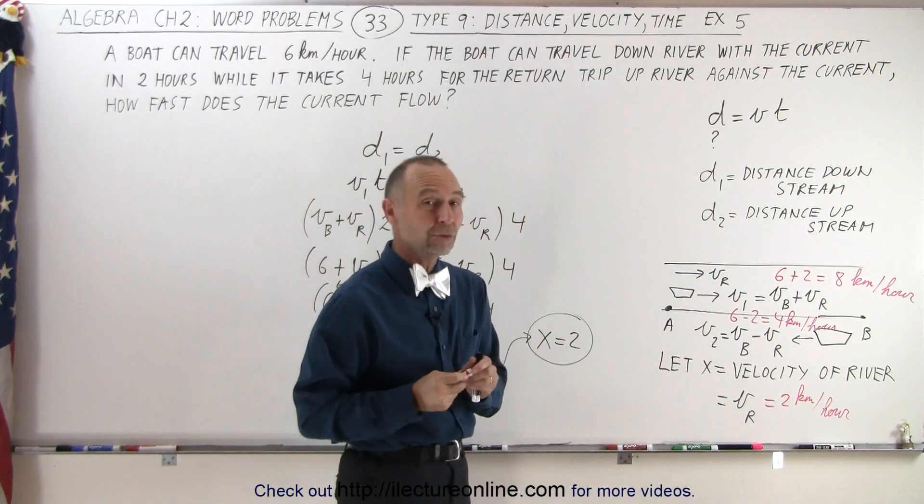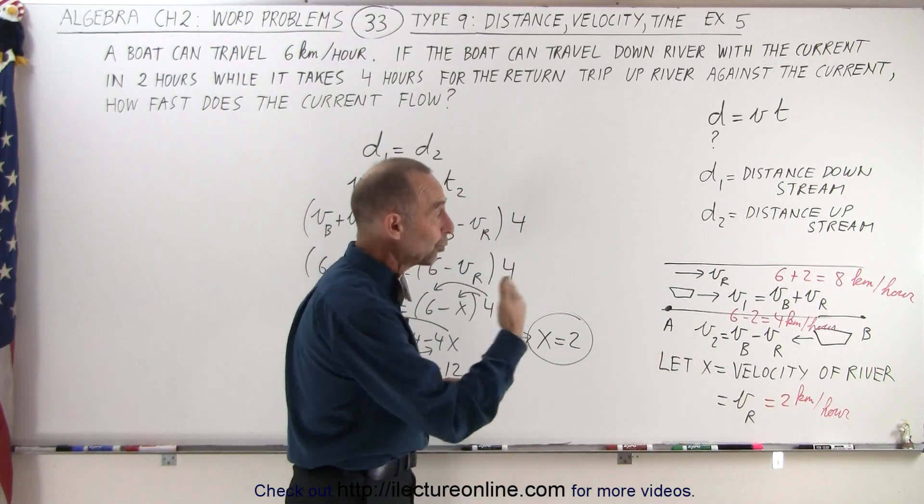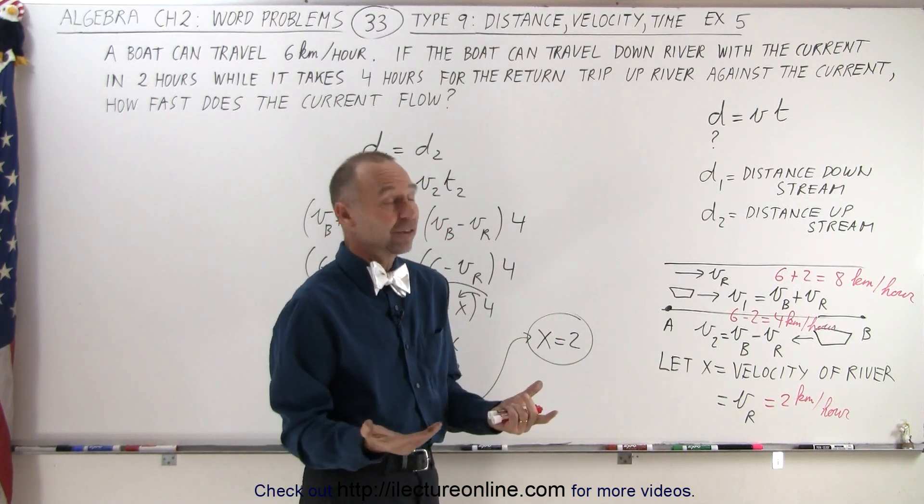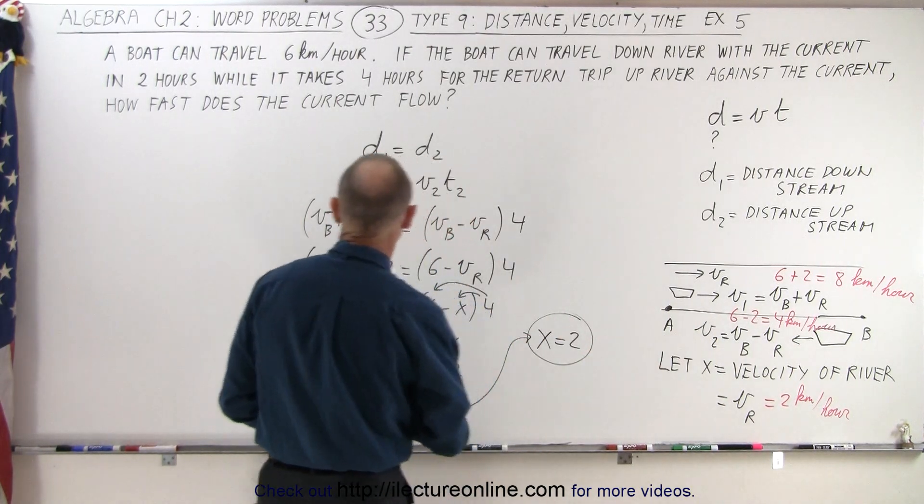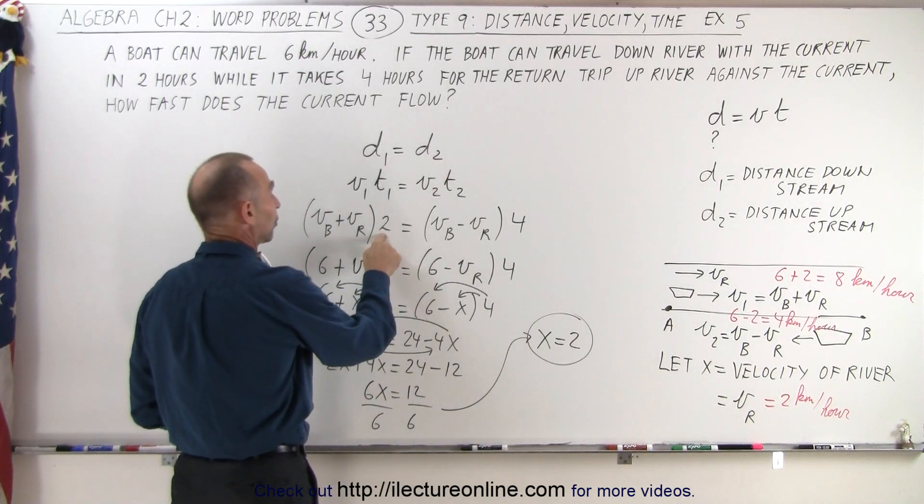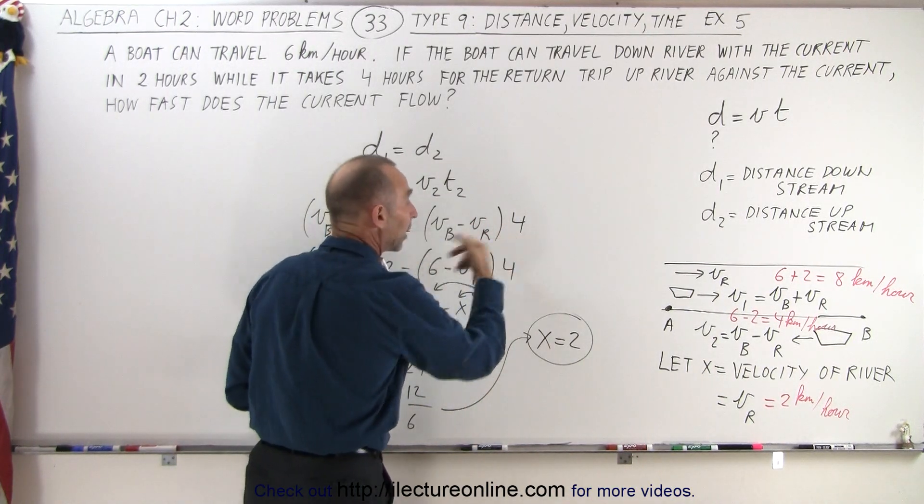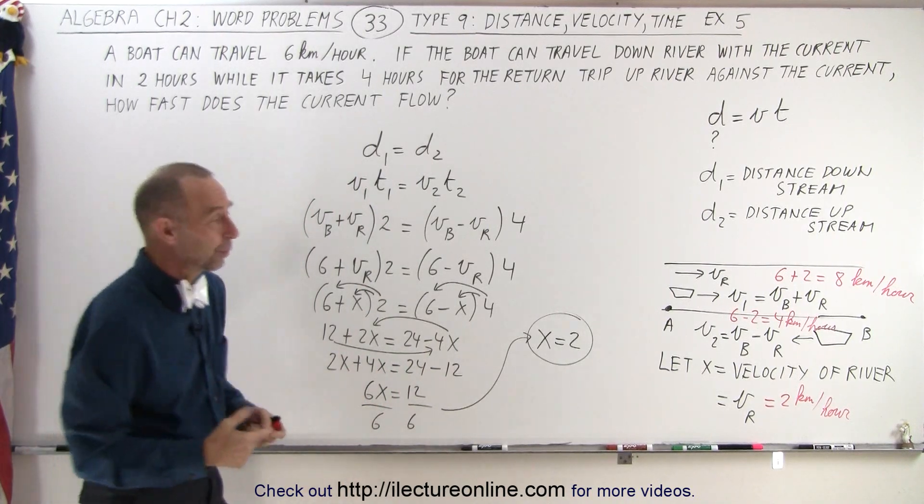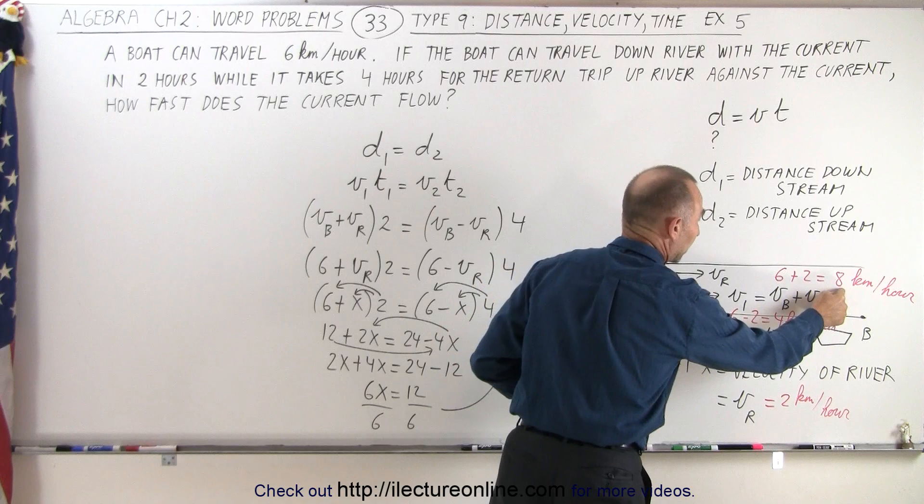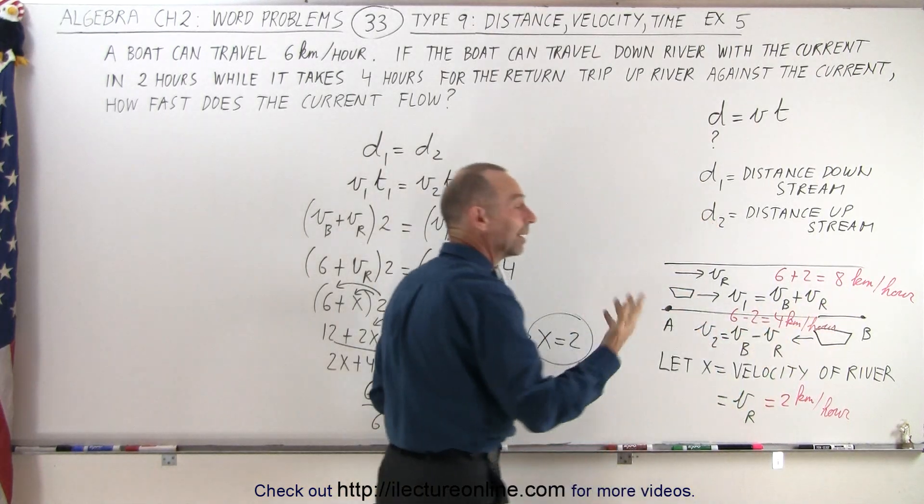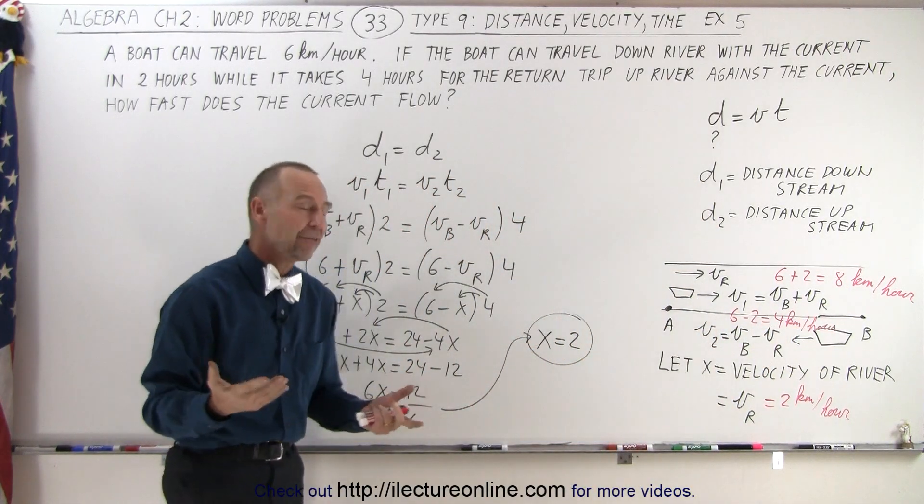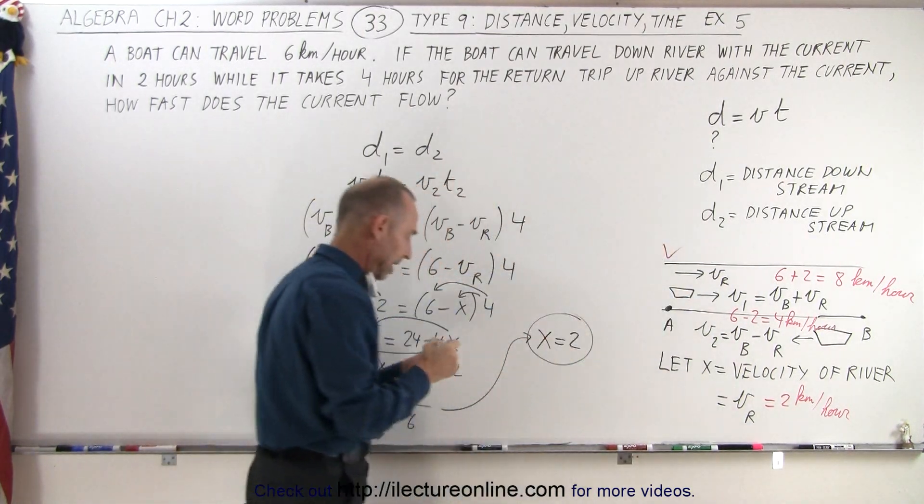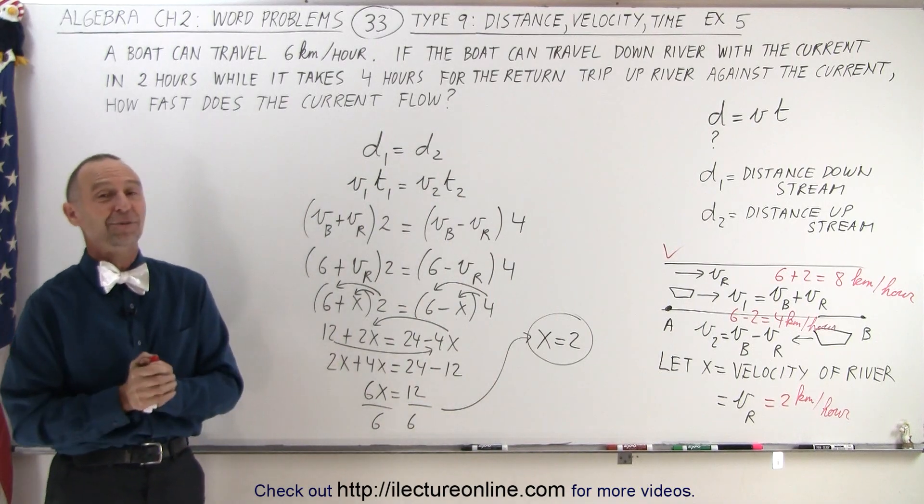You can see if the boat with the aid of the river can travel twice as fast when it goes down river compared to up river, it would take half the time. And sure enough, it only takes 2 hours to go down river and 4 hours to go back up river because the speed, the velocity down river and up river is a 2 to 1 relationship. 8 kilometers per hour down the river, 4 kilometers per hour coming back, double the speed, half the time, it does seem to check. And therefore, we can say that we probably got the right answer, and that's how it's done.